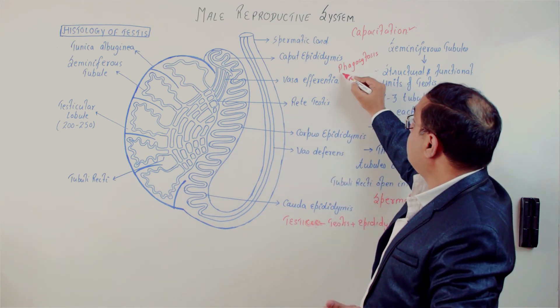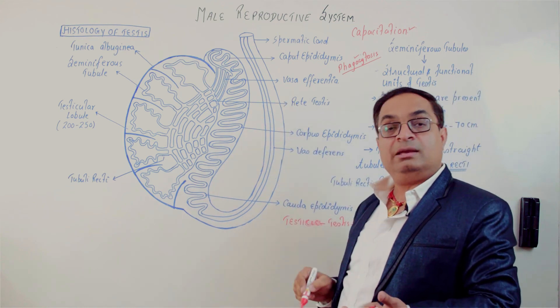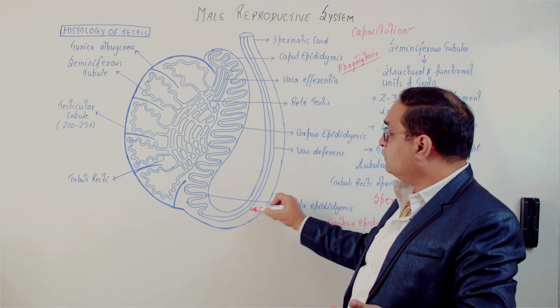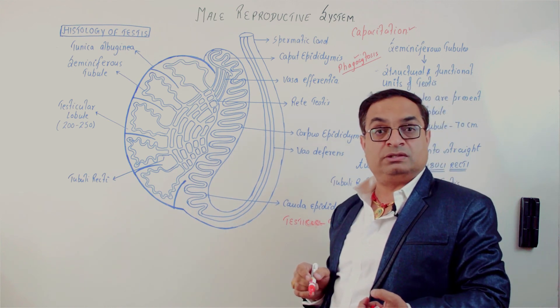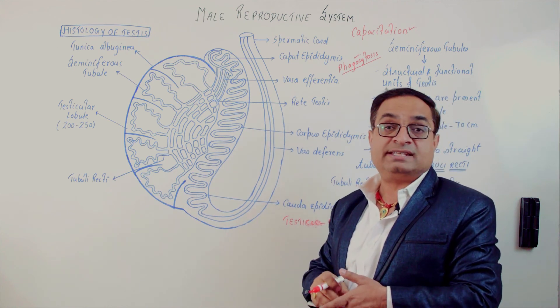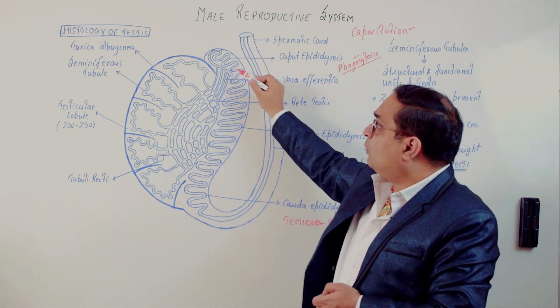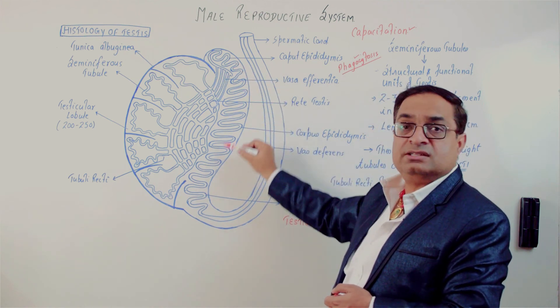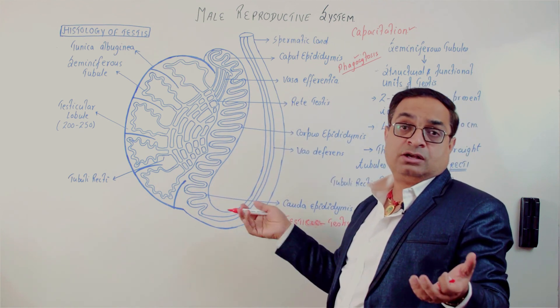Large number of sperms are stored in the vas deferens also. Vas deferens is called the secondary storehouse for sperms. It takes nearly 12 days for the sperms to cross this epididymis region, and sperms can remain alive in the cauda epididymis for even more than one month.